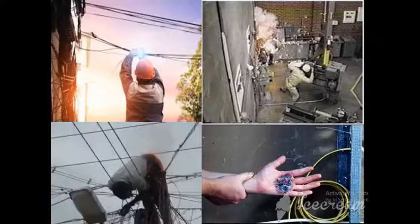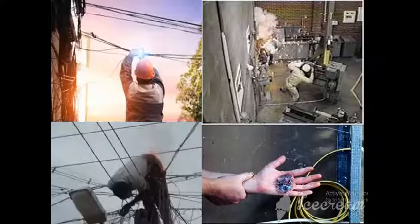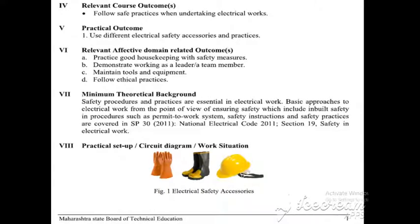These images show what happens when we do not follow electrical practices — an electrical accident will happen, which damages equipment and also damages human life, and sometimes death will occur. Next is relevant course outcome: follow safe practice when undertaking electrical work. The practical outcome is: use different electrical safety accessories and practice, meaning we learn how to use the electrical safety accessories and what are the various types of electrical safety accessories.